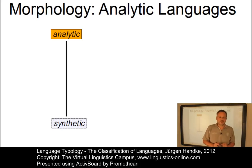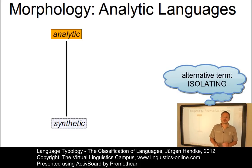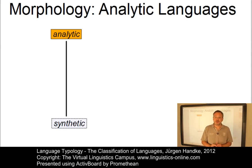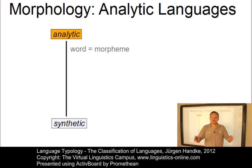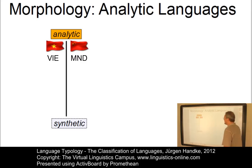Analytic languages, also referred to as isolating, generally do not allow the segmentation of their words. That is, the words of an analytic language cannot or hardly be split into smaller units. Thus, a typical analytic language is one where there is a one-to-one correspondence between words and morphemes. Well-known examples of analytic languages are Chinese and Vietnamese.